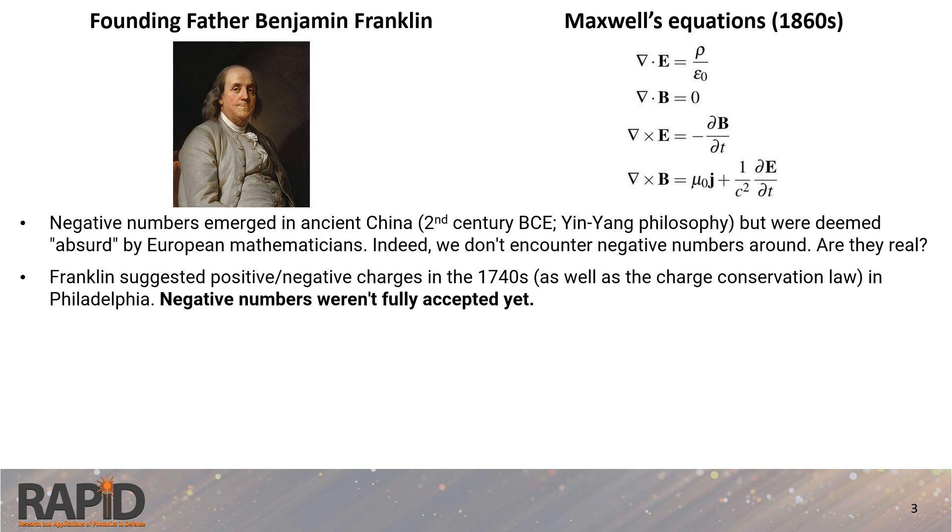Negative numbers first appeared in ancient China in the second century before current era. However, European mathematicians long viewed them with skepticism as an obstruction. Franklin, however, proposed the concept of positive and negative charges in the 1740s, even before negative numbers were fully accepted. This was revolutionary because he introduced the first truly objective example of a negative quantity, the negative electric charge of the electron.